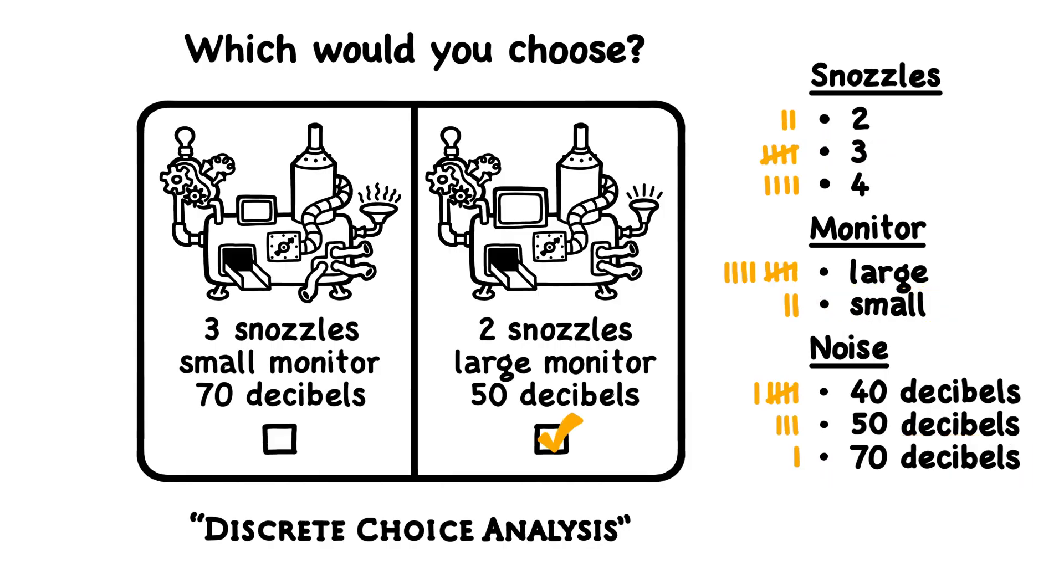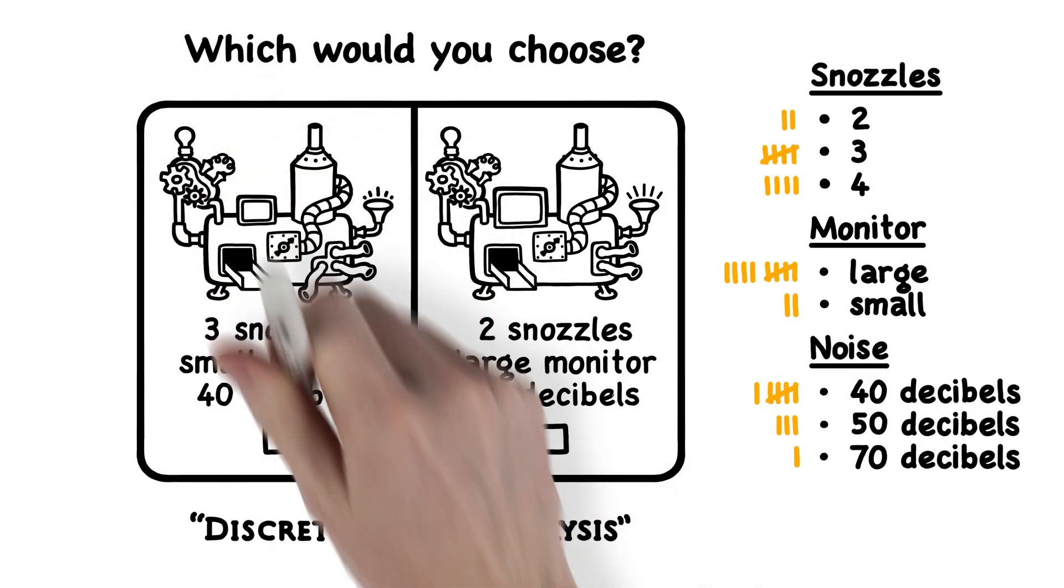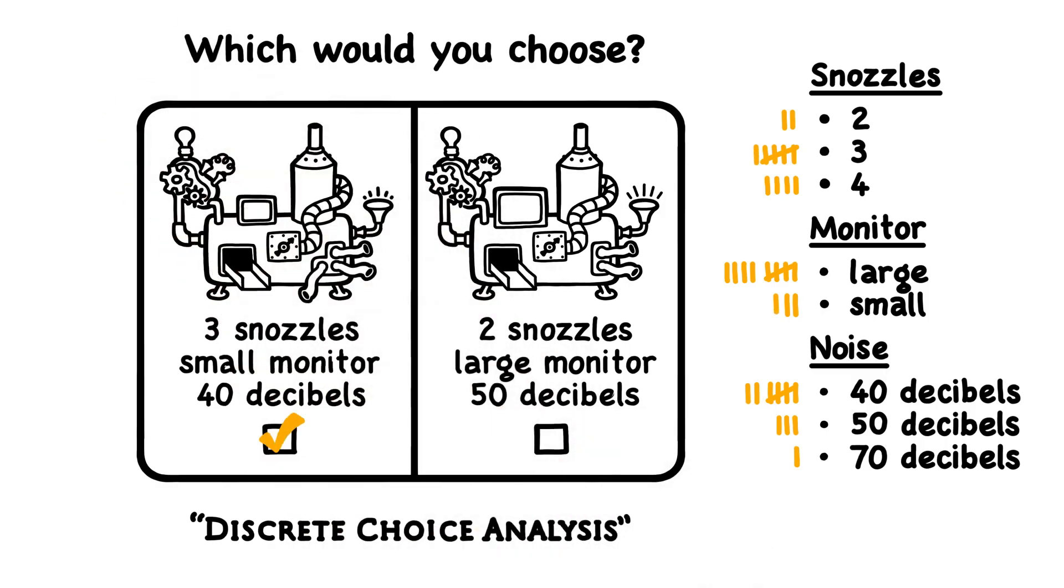Across a sample of respondents, numerous combinations are shown and the software keeps track of how often different features were chosen at different prices when offered on different bazoogles.